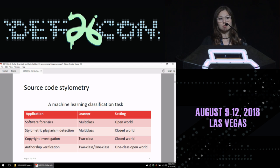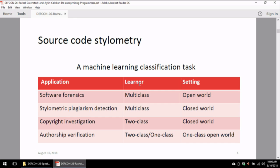How can we use source code stylometry from a machine learning perspective? We are looking at different tasks, such as multi-class or two-class machine learning tasks, where we can do software forensics, plagiarism detection, copyright investigations in two-party cases, as well as authorship verification, which would be a one-class to open-world machine learning task.